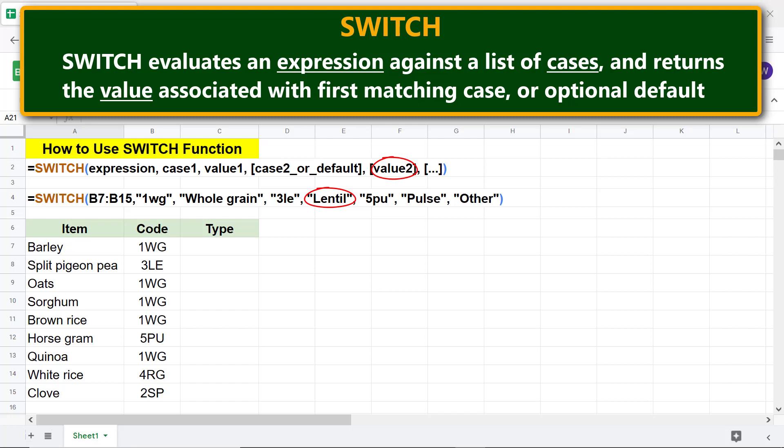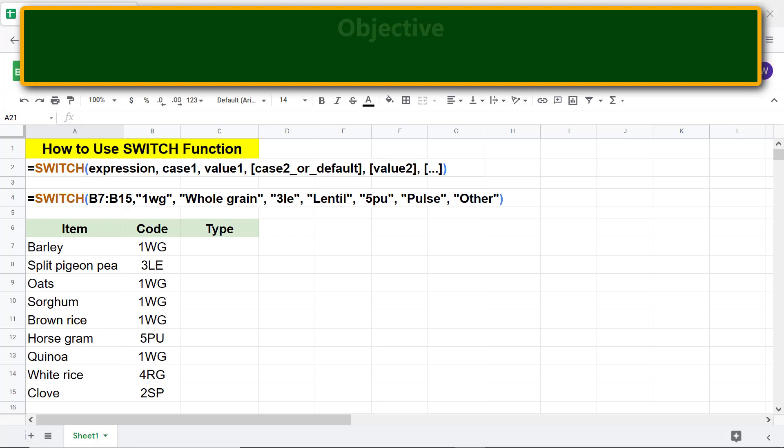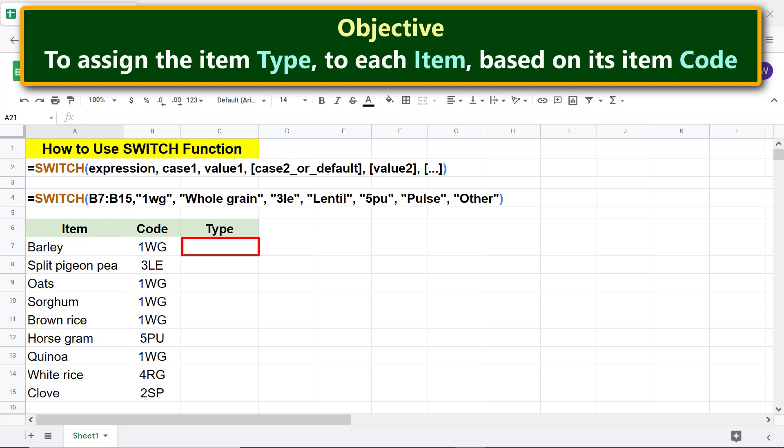All right, here is an objective of using the SWITCH function: to assign the item type to each item based on its item code. Moving forward, let's type the SWITCH function formula.